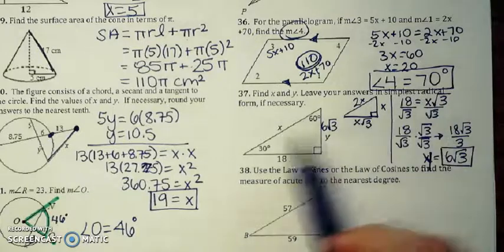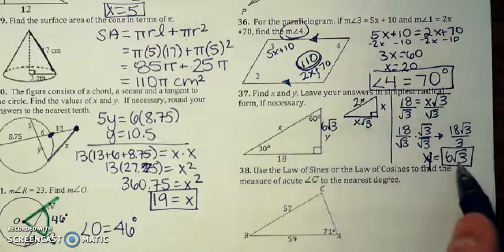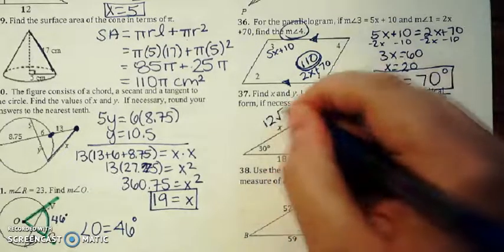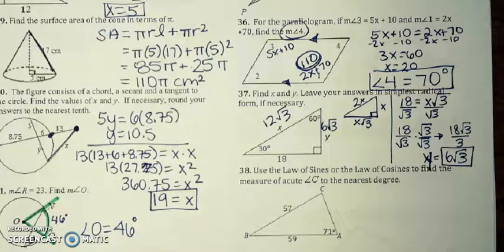And then all you have to do to find the hypotenuse is multiply that by 2. So that's going to end up being 12 radical 3.